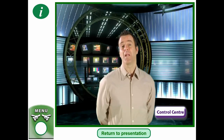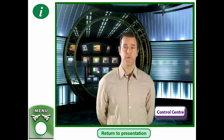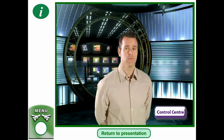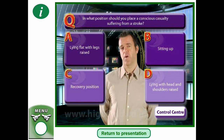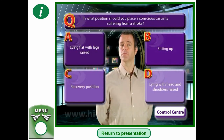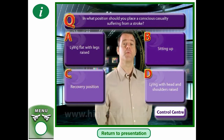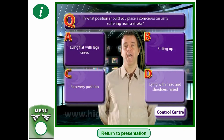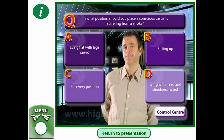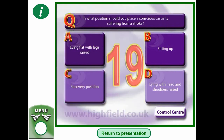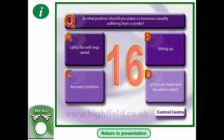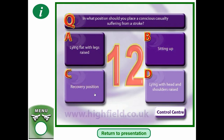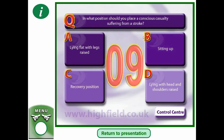Next question: in what position should you place a conscious casualty suffering from a stroke? A — lying flat with legs raised, B — sitting up, C — recovery position, or D — lying with head and shoulders raised? The answer is D — lying with head and shoulders raised.